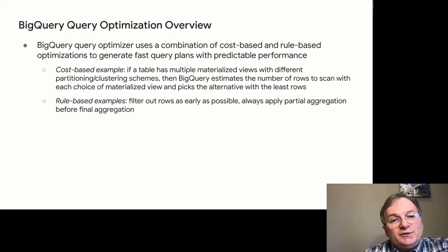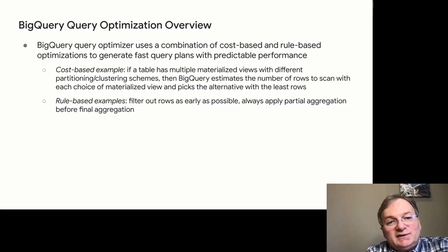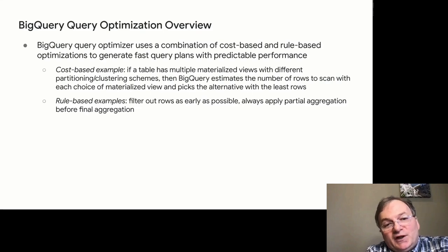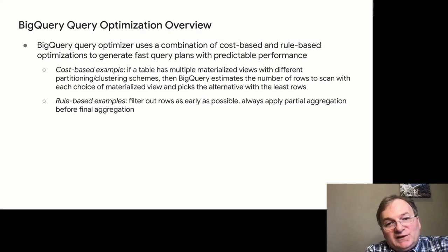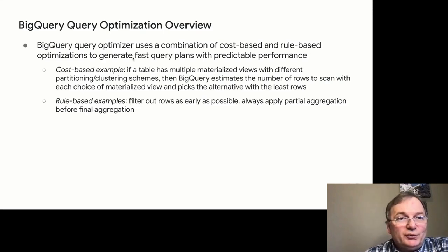For rule-based optimizations: the simplest is filter pushdown — we always try to execute filters as early as possible. Another good example is partial aggregation: BigQuery always prefers to do partial aggregation before final aggregation because it helps reduce possible data skew by the time you need to hash partition data by aggregation keys. This makes query processing time less sensitive to data skew and more predictable — and data skew is frequently very difficult to predict up front.